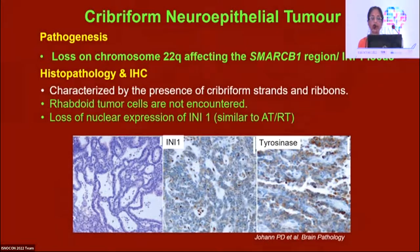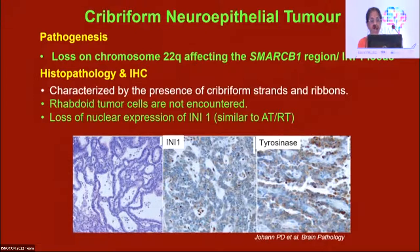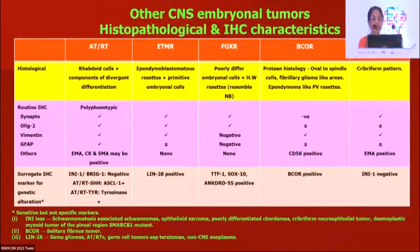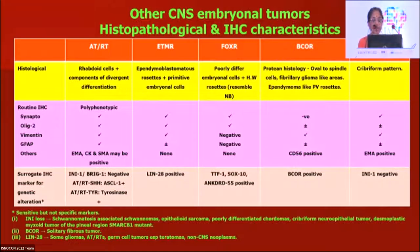Cribriform neuroepithelial tumor — a new entity — has loss of INI1 with SMARCB1 mutation but lacks rhabdoid cells, featuring a characteristic cribriform pattern. There are now at least three CNS tumors with INI1 loss: ATRTs, cribriform neuroepithelial tumors, and the pineal SMARCB1-mutant desmoplastic mixoid tumor. BCOR can be positive in solitary fibrous tumors; LIN28 can be positive in some gliomas, ATRTs, germ cell tumors, and non-CNS neoplasms. These IHC markers are sensitive but not 100% specific.